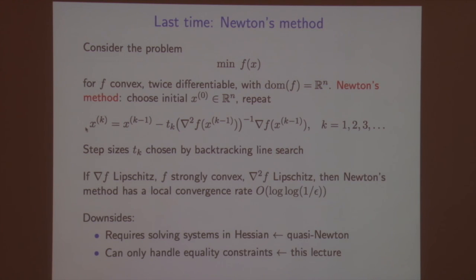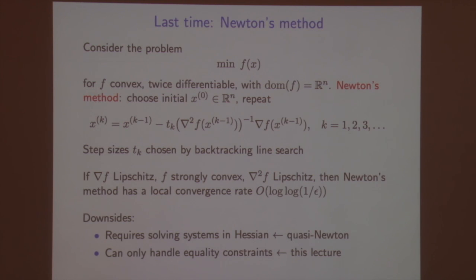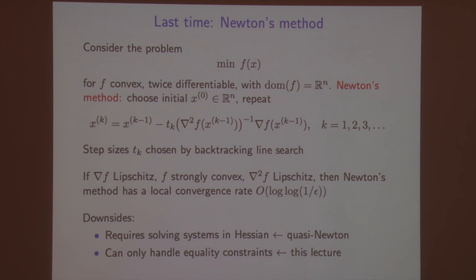Like gradient descent, Newton's method uses quadratic approximations to the function at each step. Unlike gradient descent, it uses the Hessian of the function to form that quadratic approximation, whereas gradient descent only uses the identity matrix times some constant 1/t. Newton's method has much faster convergence than gradient descent. At step k, I solve the Hessian times some vector v equals the gradient — that's the Hessian inverse of the gradient — and take a step along that direction.